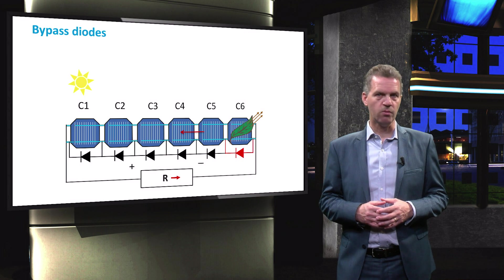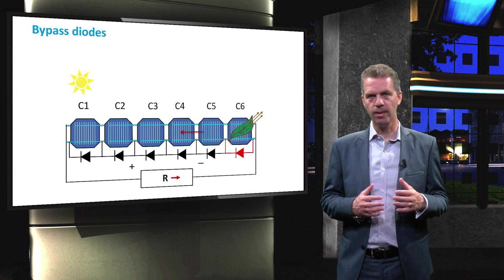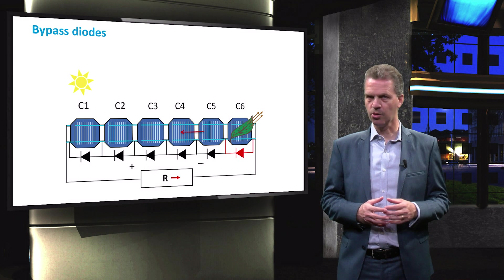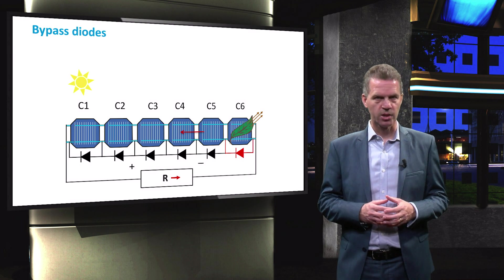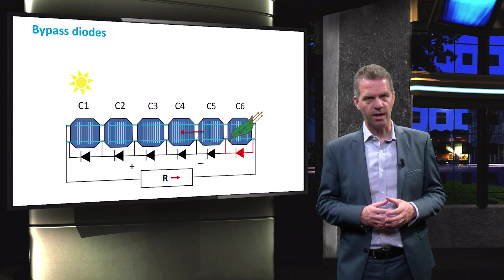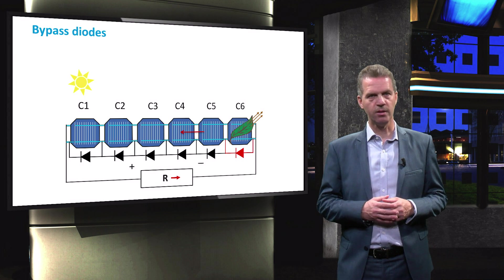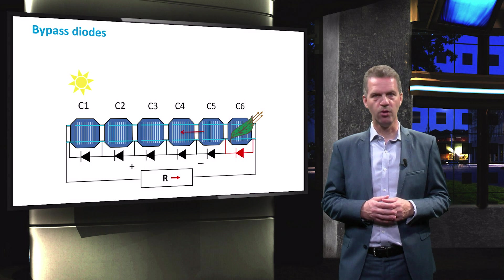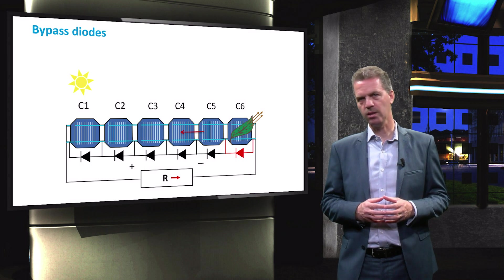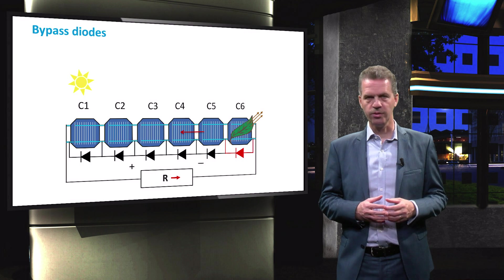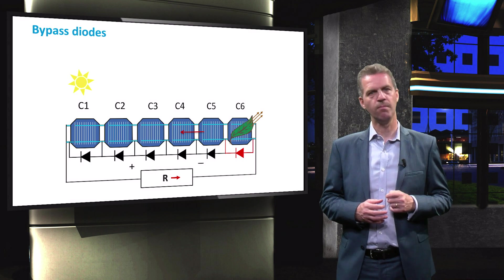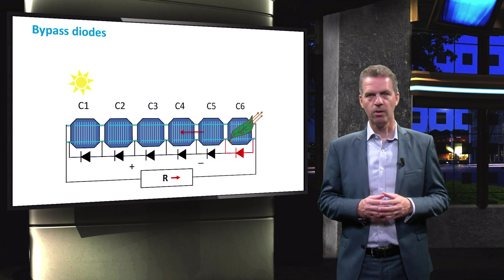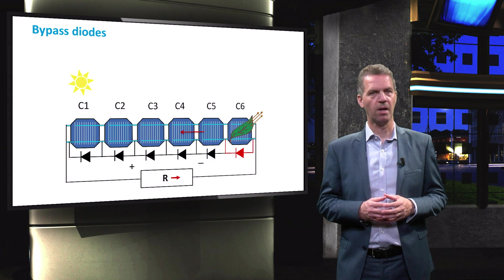Such a bypass diode will block a current flow under negative bias, but will start conducting current under positive bias. In the example, in the case that one cell is shaded, the bypass diode is biased by the five non-shaded cells and will start conducting current. As a result, the current can bypass the shaded cell and will not dissipate power. The PV module can now still produce power.